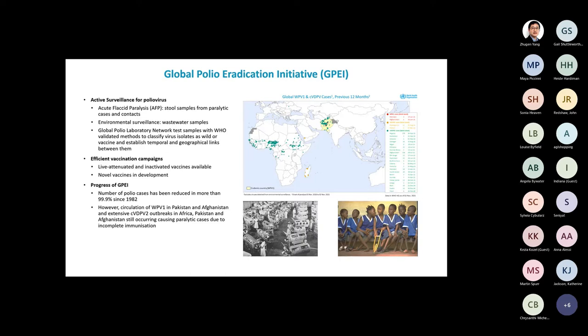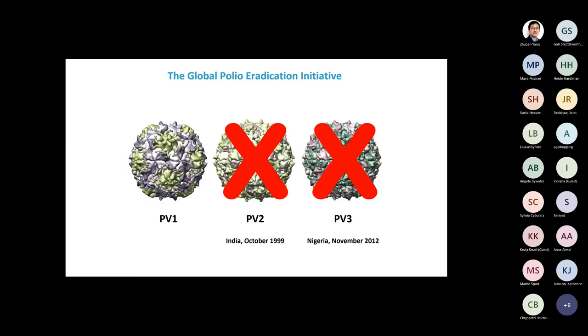New vaccines have been developed. NIBSC has developed, with some collaborators, a new vaccine now being used to try to stop VDPV2 outbreaks. The good news is that two of the three serotypes have been eliminated: the last case due to wild-type PV2 was found in India in 1999, and the last PV3 in Nigeria in 2012. Only type 1 remains circulating.